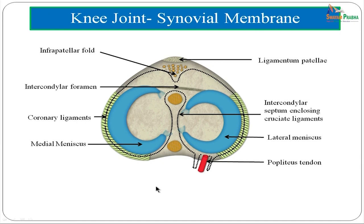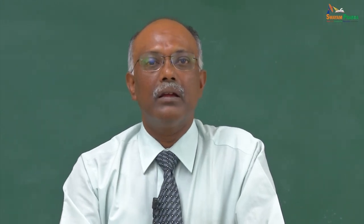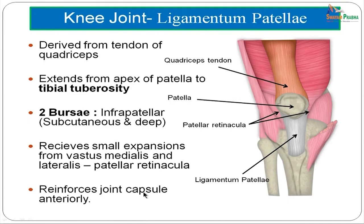The first extrinsic ligament is the ligamentum patellae, derived from the tendon of the quadriceps femoris. It extends from the apex of the patella to the tibial tuberosity and has two related bursae — the subcutaneous and deep infrapatellar bursae. It receives two small expansions from vastus lateralis and vastus medialis called patellar retinacula. The ligamentum patellae reinforces the joint capsule from the anterior aspect.